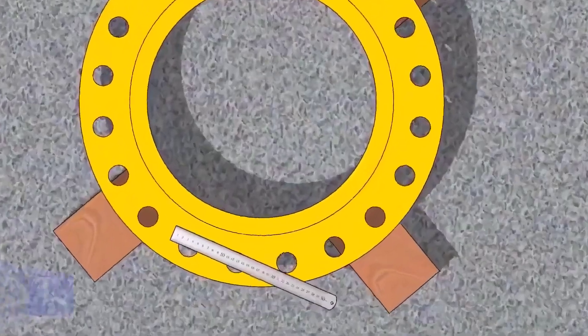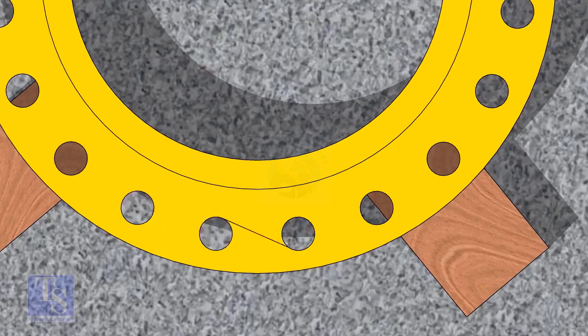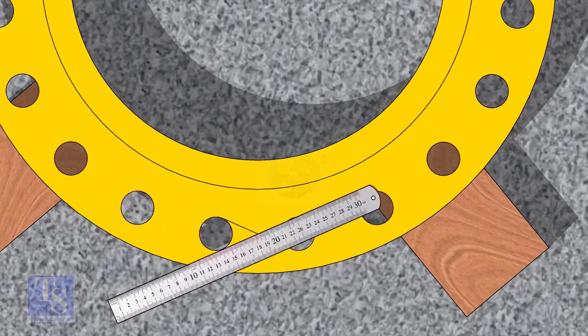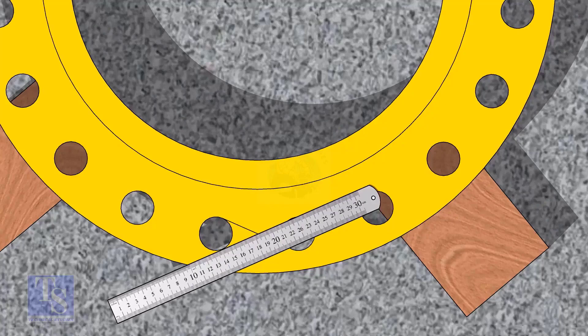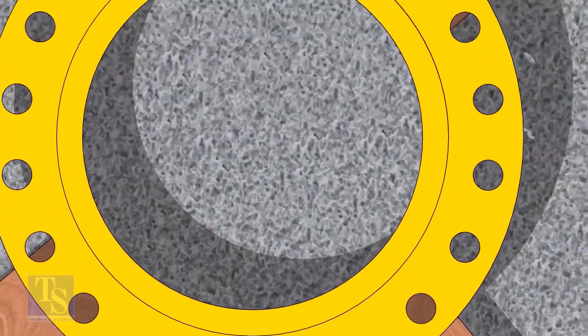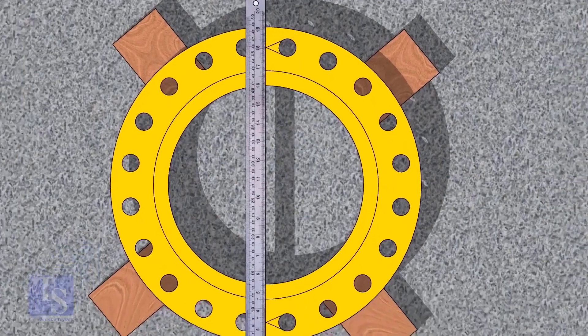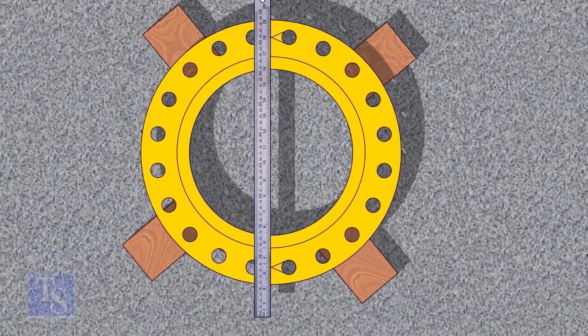Let us mark the center line of the flange. Draw tangential lines of two adjacent holes. The intersection of the lines is the center of these holes. Draw the center of the two holes on the opposite side. Draw the center line of the flange as shown.